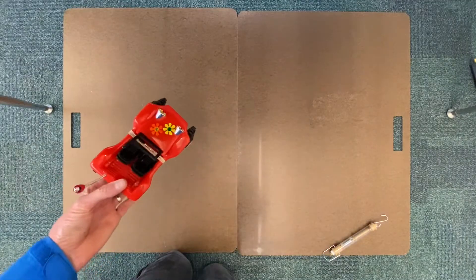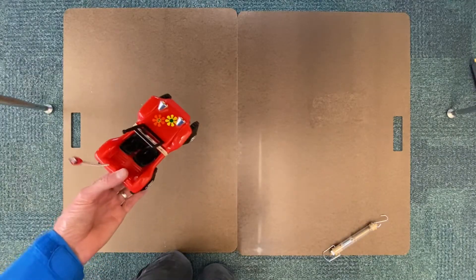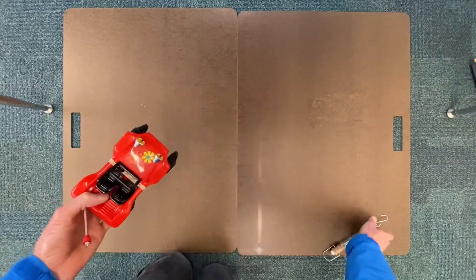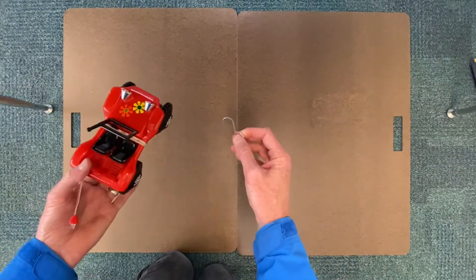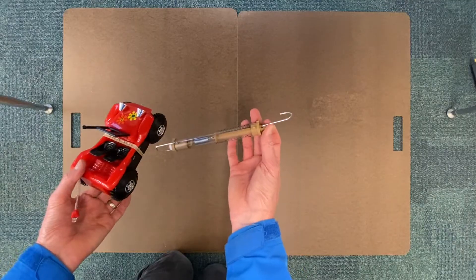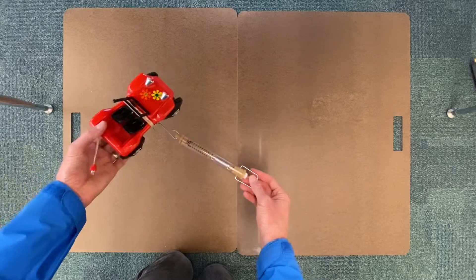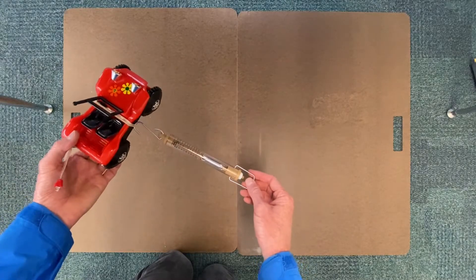But if I want to make it turn I have to apply a force. If I want to make it turn into a circle I've got to apply a perpendicular force. So I'm going to use the spring scale and the hook on the end to pull perpendicular to the path of the car's motion and see if I can get it to turn into a circle.